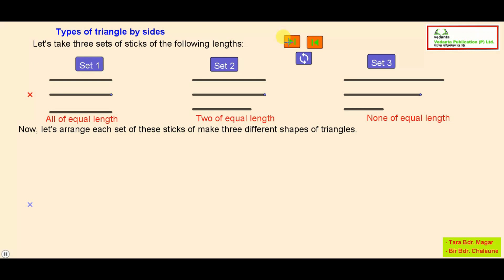Now let's arrange each set of these sticks to make three different shapes of triangles. Triangle formed from set one, triangle with all sides equal.